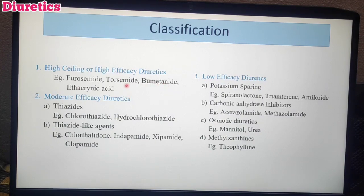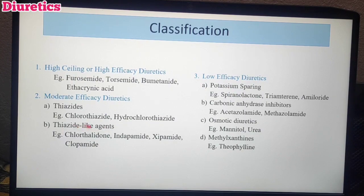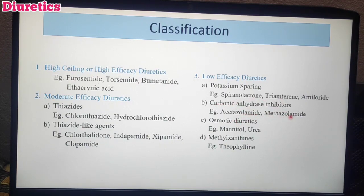Using mnemonics will help you remember the classification. If the drug has '-amide' or '-anide', it is a Thiazide-like drug. Chlorothiazide and Hydrochlorothiazide are Thiazides. '-Zolamide' is the suffix for Carbonic Anhydrase Inhibitors. There are many mnemonics based on drug suffixes — let's note them.